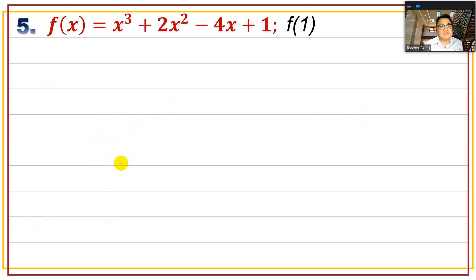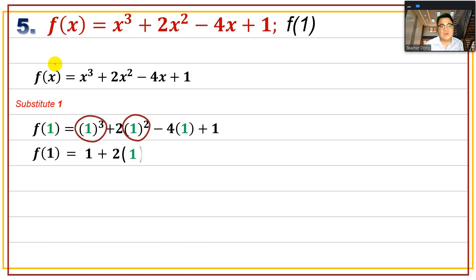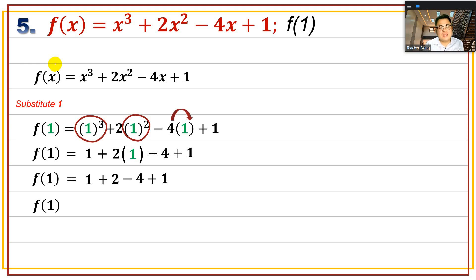Number 5: f(x) = x³ + 2x² - 4x + 1, with x = 1. Substitute: f(1) = 1³ + 2(1²) - 4(1) + 1. Simplify: 1³ = 1, 1² = 1 so 2×1 = 2, -4×1 = -4, bring down +1. So f(1) = 1 + 2 - 4 + 1 = 0.